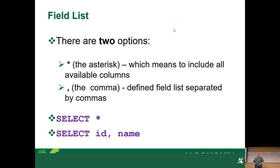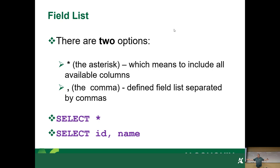In the field list, you have two options: you can use the asterisk, which means include all available columns, or you can have a comma-delimited list. SELECT star grabs every available column. SELECT star is great when you're exploring the database and you don't know what's in it, but it's really bad to do in practice or in production. You should only ever pull back what you need.